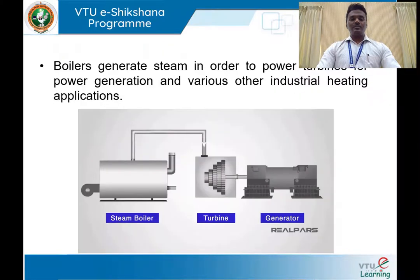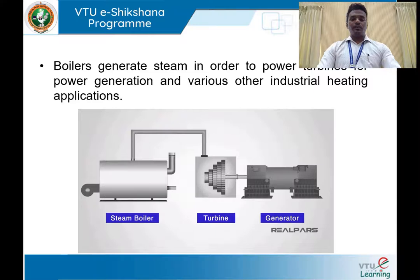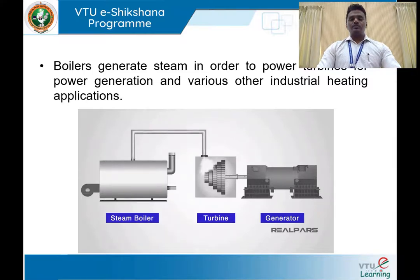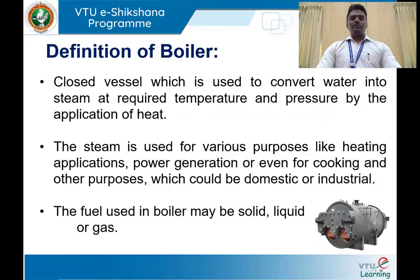A steam boiler is used for generation of steam at the required temperature and pressure. The steam produced in the boiler is sent to the point of use — a steam turbine — through a steam pipe. The steam entering the turbine acts on the turbine blades, causing rotation. Since the turbine shaft is coupled to a generator shaft, the generator produces electricity, which can be supplied to various points of use. In this session, we are going to discuss how steam can be generated using a boiler.